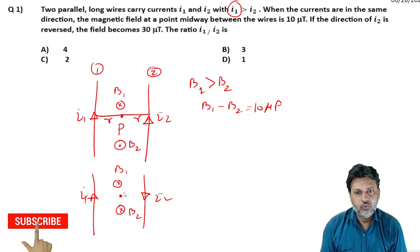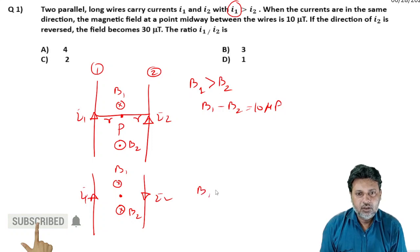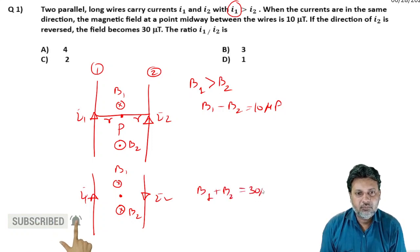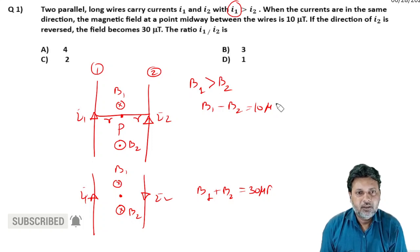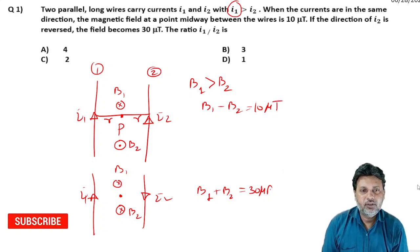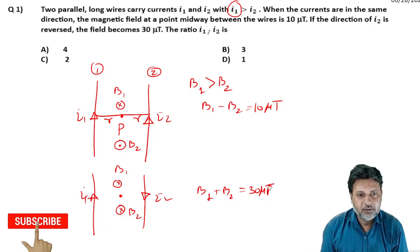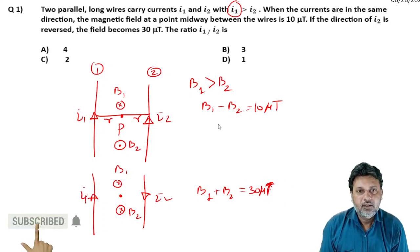When I2 is reversed, both magnetic fields at the midpoint are in the same direction, so the magnetic field becomes 30 micro tesla. Now using the two equations — when fields subtract we get 10 micro tesla, and when fields add we get 30 micro tesla.